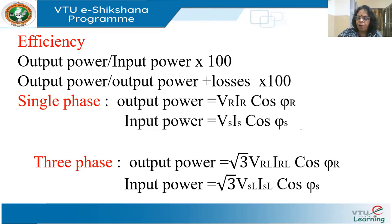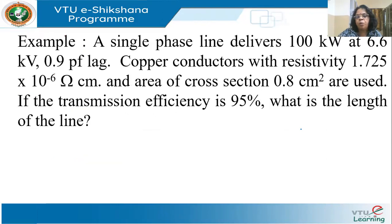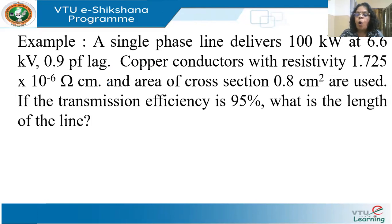The short line model is the simplest model for the transmission line. Now let's take one example. A single phase line delivers 100 kilowatts at 6.6 kV, 0.9 power factor lagging. Conductors with resistivity 1.725 × 10⁻⁶ ohm-centimeter and area of cross section 0.8 cm² are used. The transmission efficiency is 95%. Determine the length of the line.